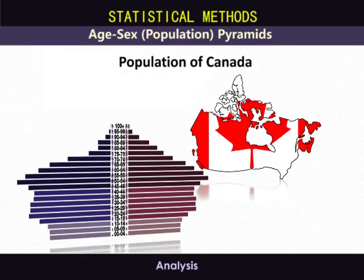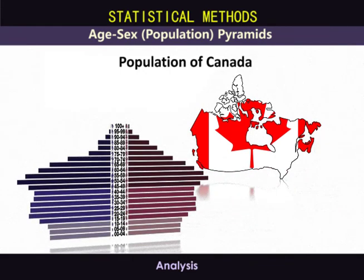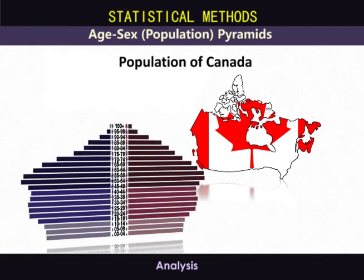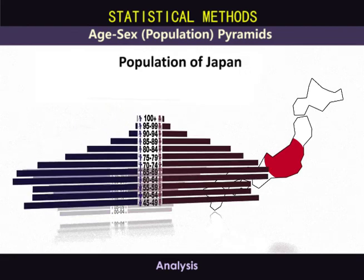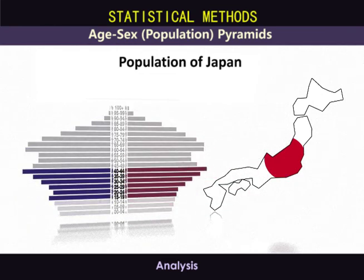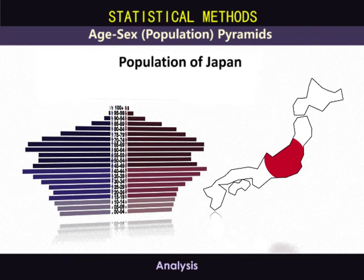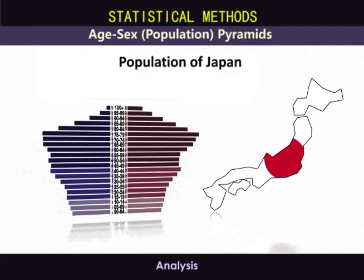Let's look at Canada, where most of the population is clustered around the middle of the graph. Because there are fewer people in the pre-reproductive age group than in the reproductive one, the population will grow more slowly as the number of people reaching their reproductive years declines. Finally, let's look at Japan. Because a majority of its population is in the post-reproductive years and the number of people is smaller at each younger interval, the population will begin to decline as fewer and fewer people reach reproductive age.